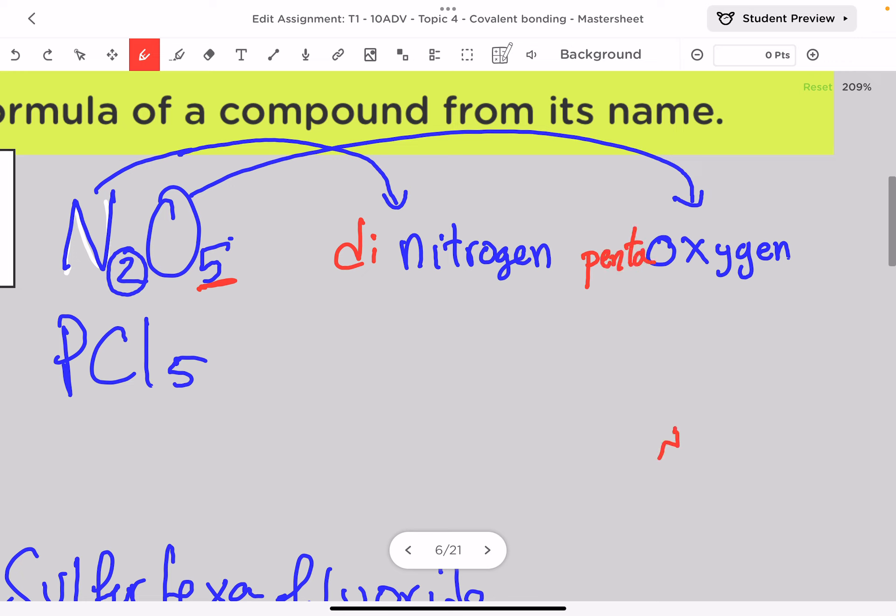Then you do a small change to the suffix of the second element. The second element, you must change the termination to 'ide.' So if I look at the name dinitrogen pentoxide, if there are two vowels next to each other, you can skip the 'a' and just write pentoxide: dinitrogen pentoxide.